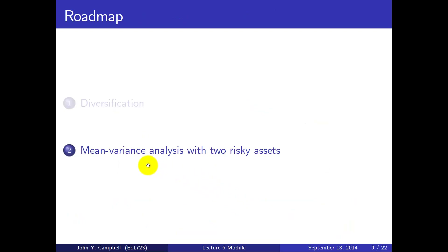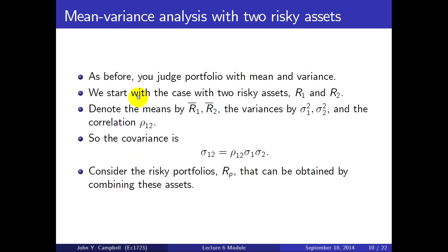That was a basic discussion of diversification. Now I want to talk more generally about how you combine assets when they may have different means and different variances — we're going to allow them to be different — but to keep things simple, we'll assume there are only two risky assets. We judge portfolios by their mean and variance. We start with two risky assets r1 and r2, with means R-bar-1 and R-bar-2, variances sigma-squared-1 and sigma-squared-2, and correlation rho-1,2 — previously assumed to be 0, now we'll allow for it. The covariance is the correlation times the product of the two standard deviations, by definition.